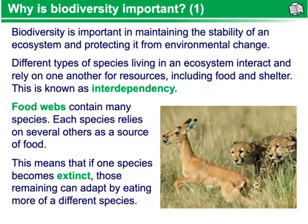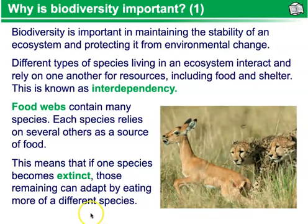Food webs contain many species. Each species relies on several others as a source of food. This means that if one species becomes extinct in that particular environment, those remaining can adapt by eating more of a different species.